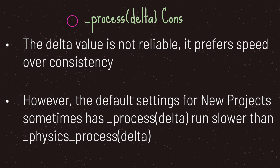The default settings for any new project in Godot has V-sync on, and this is a good project setting because most projects won't even need the powerhouse that the process virtual method provides. There are times where the process virtual method runs slower than the physics process virtual method, because Godot is trying to help you by limiting how many times the process method is actually called.